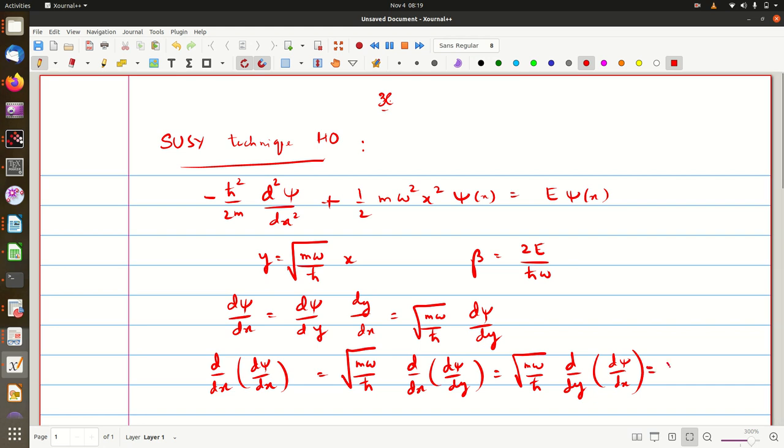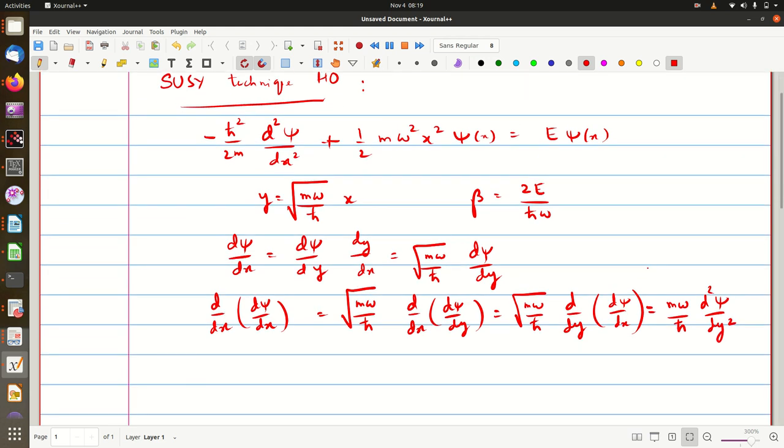That means you will get root m omega by h cross and root m omega by h cross times d by dy of d psi by dy, which is d square psi by dy square. Let us substitute this into this equation.